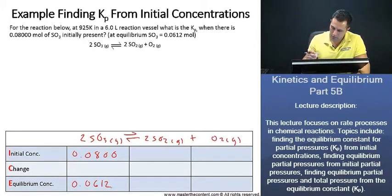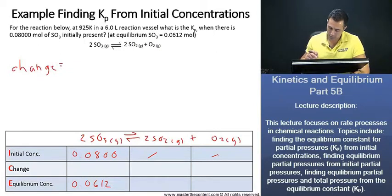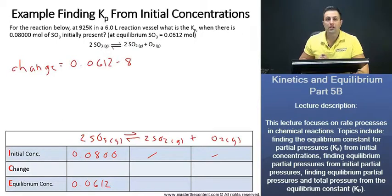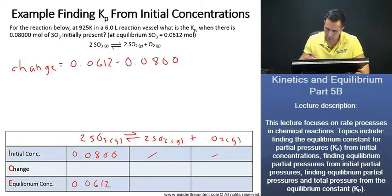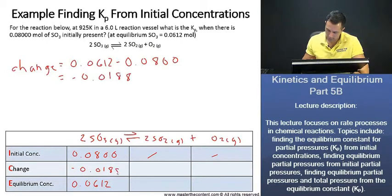We don't really have any sulfur dioxide or oxygen present initially. The change is going to be our equilibrium concentration, which is 0.0612 minus our initial concentration, which is 0.0800. This is going to give us a value of negative 0.0188. So this value here now is 0.0188.